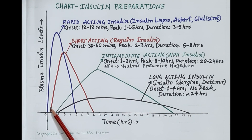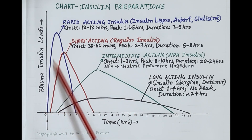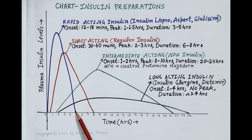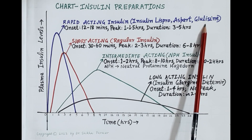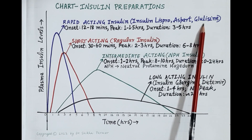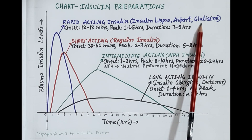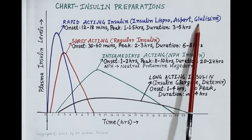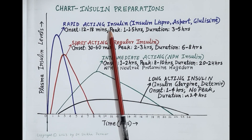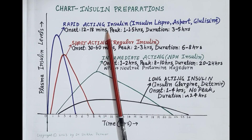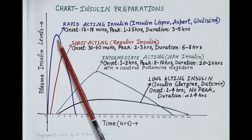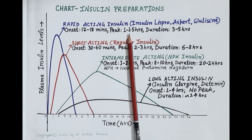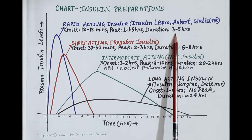The blue color graph is for rapid acting insulin preparations — namely insulin Lispro, insulin Aspart, and insulin Glulisine. These are termed insulin analogues because they are insulin with a slightly modified molecular structure synthesized by recombinant DNA technology. They are rapidly absorbed after subcutaneous administration, with an onset of action between 12 to 18 minutes, peak effect in 1 to 1.5 hours, and duration of action lasting 3 to 5 hours.